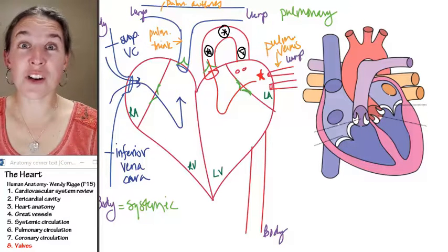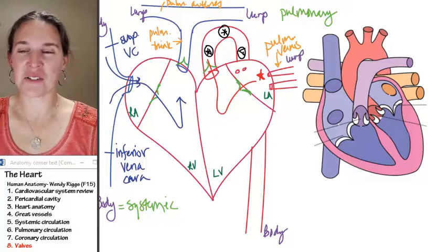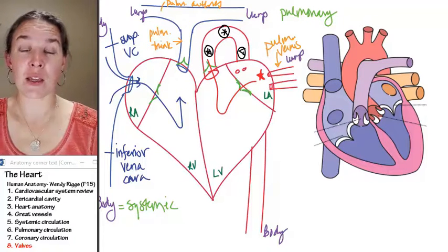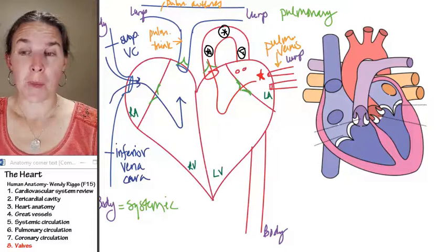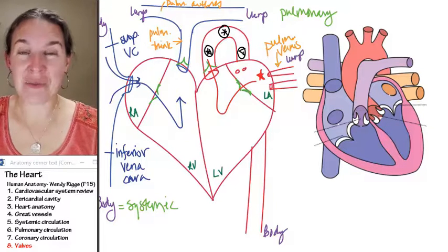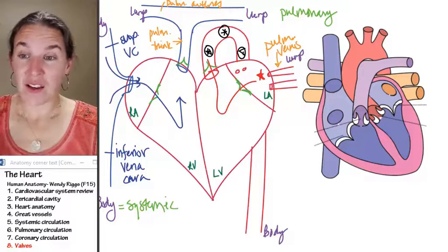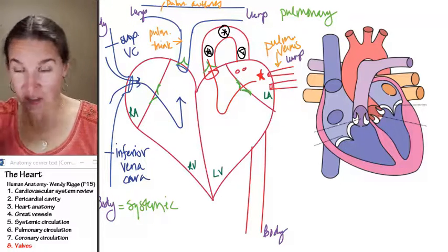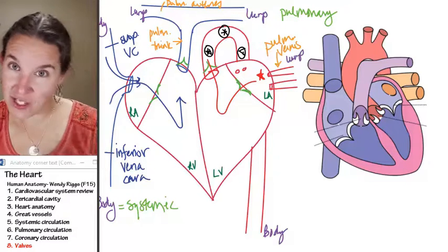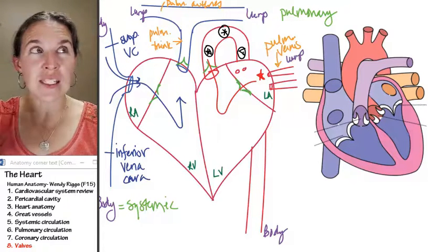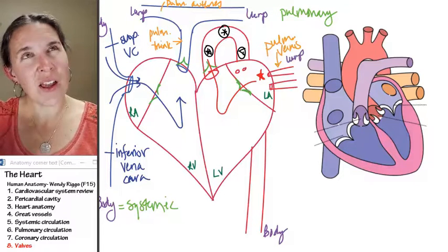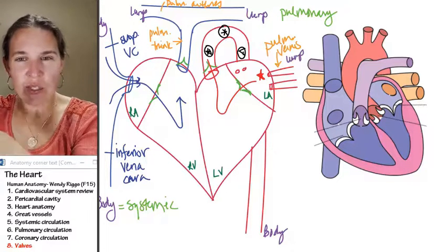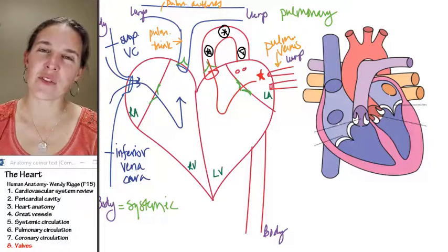Valves are the critical anatomical structures that prevent blood from going backwards. For whatever reason, our blood flows from atria to ventricles to somewhere, to atria to ventricles to somewhere, to atria to ventricles to somewhere, and it goes in that order.